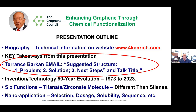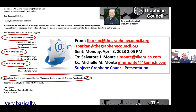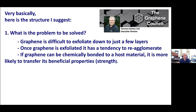Terence gave me a structure for the presentation. He said: what is the problem to be solved? What is the solution? What are the next steps? Graphene is difficult to exfoliate down to just a few layers. Once graphene is exfoliated, it has a tendency to re-agglomerate. If graphene can be chemically bonded to a host material, it's more likely to transfer its beneficial properties and strength — that's the goal.